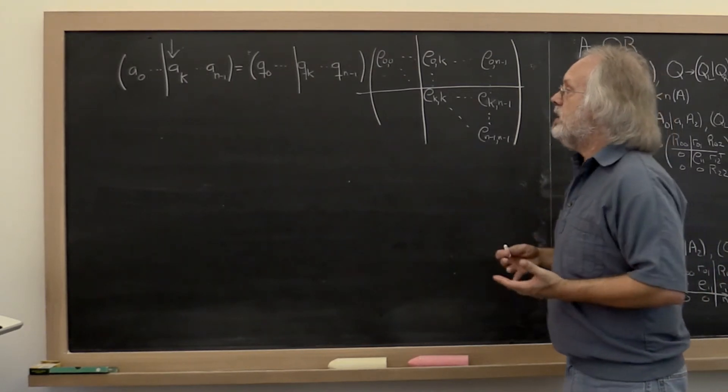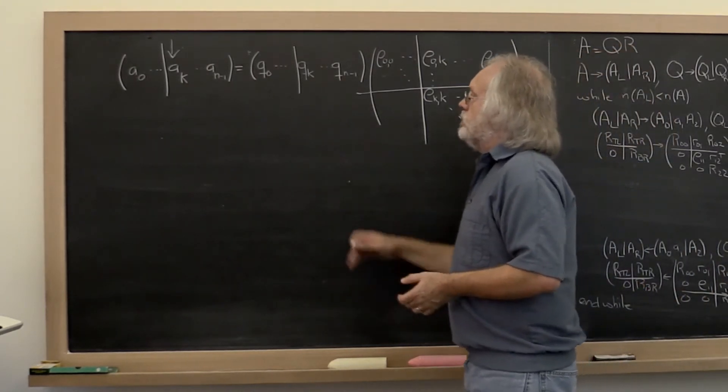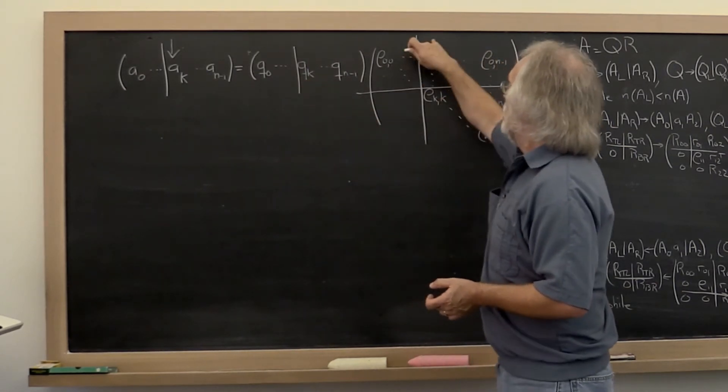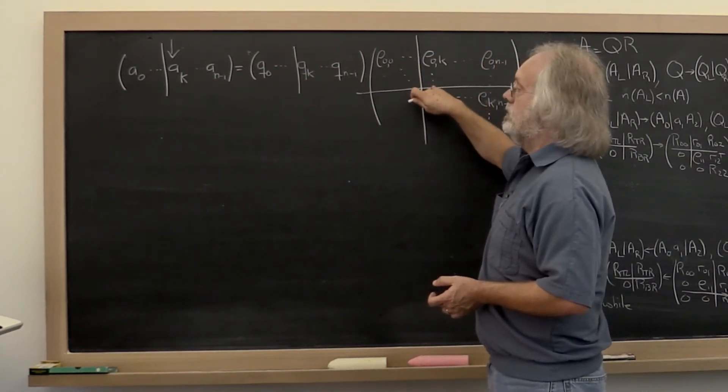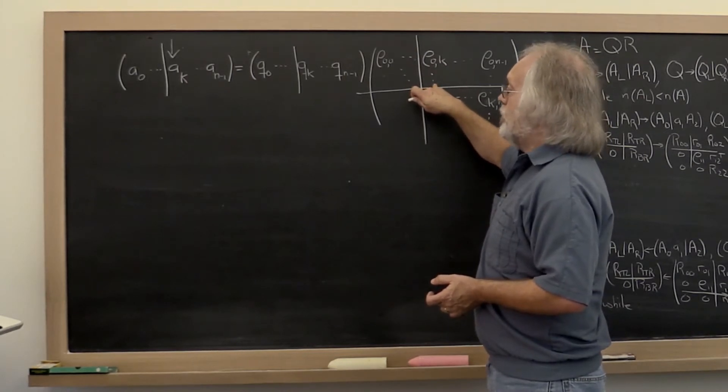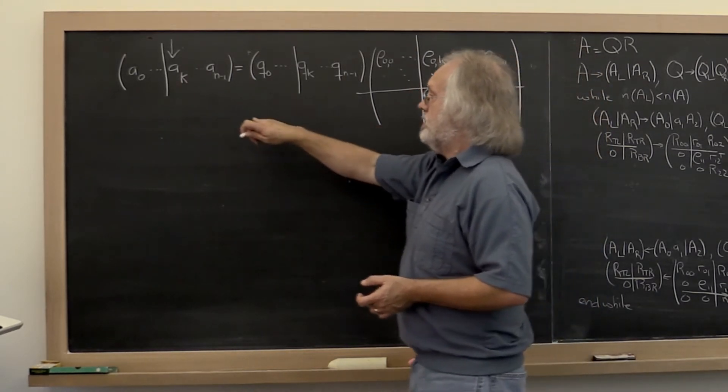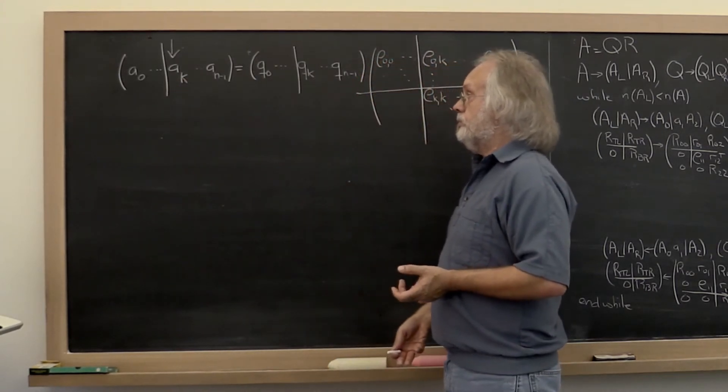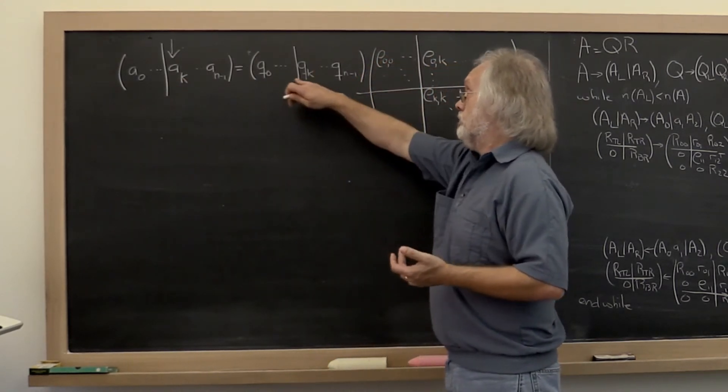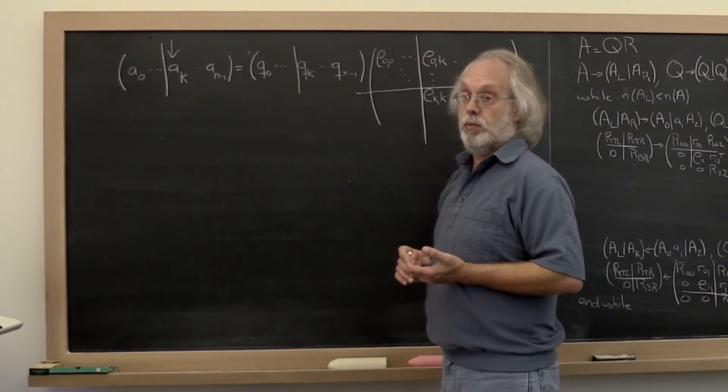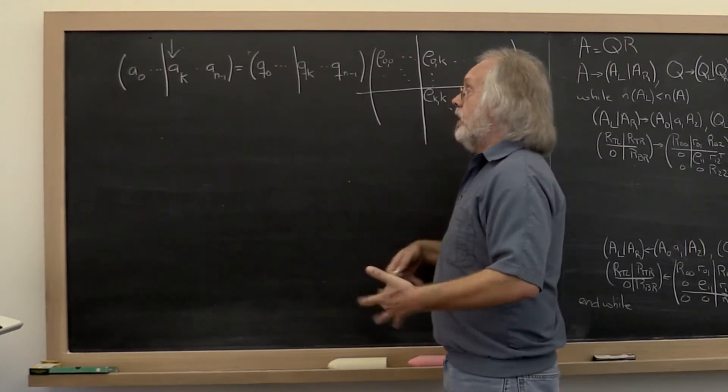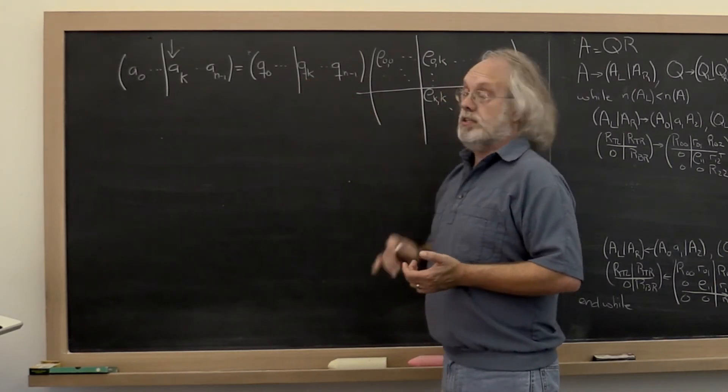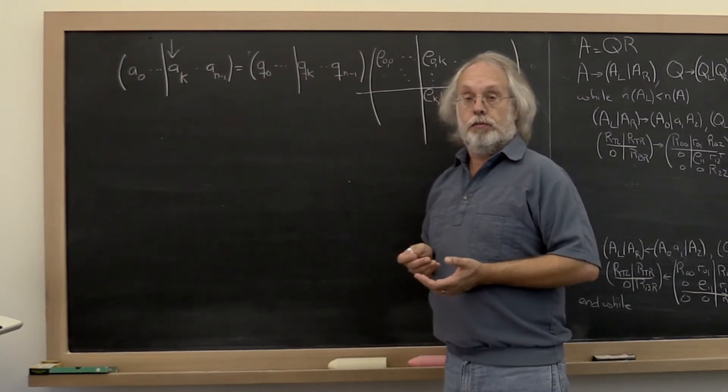And then what we said was, to compute the next column of Q, what we have to do is compute all of these coefficients right here. And then with that we could update a_k to compute the component orthogonal to q_0 through q_{k-1}. And then we could compute the length of that, normalize by that, and end up with the desired new column of Q.